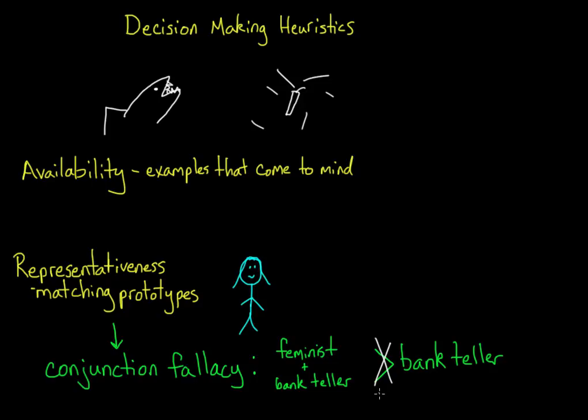Now, be careful not to get confused between availability and representativeness. When you're using the availability heuristic, you're thinking of actual memories that can come to your mind, that are available in your head. With representativeness, you're not necessarily thinking of exact memories, you're thinking of a prototype of this idea.